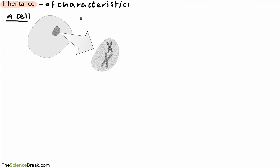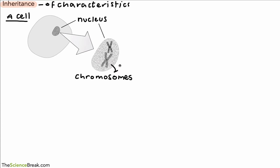By inheritance we mean the inheritance of characteristics from parents. To help us understand, here we've got a cell, and in the middle of the cell is the nucleus. The arrow shows that I've magnified the nucleus in the second diagram. Inside the nucleus you can see two chromosomes — there are usually more in cells, but I've just drawn two to make it less confusing.